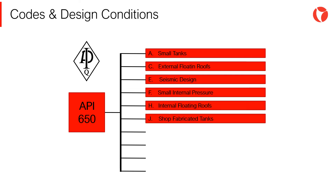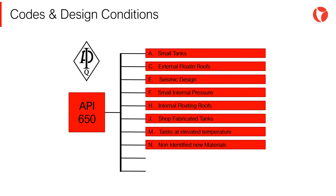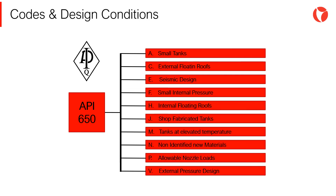On the other hand, the code has 27 annexes, covering the different roof types, internal and external pressure considerations, seismic design and allowable nozzle loads, among others.